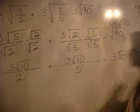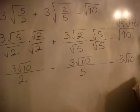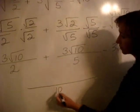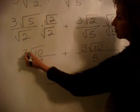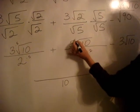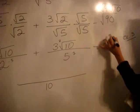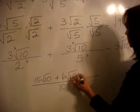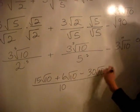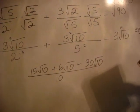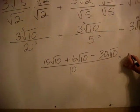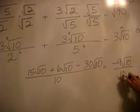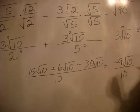I know I'm going really fast, so you can just rewind and look at this as you need to. We find the common denominator — we can see that that's ten. So we need to multiply this one top and bottom by five, this one top and bottom by two, and this one by ten. So we get fifteen square root of ten plus six square root of ten minus thirty square root of ten. Since they're all square root of tens they're like terms, so we get a final answer of negative nine square root of ten over ten. There's nothing that goes into nine and ten, so this is your final answer.